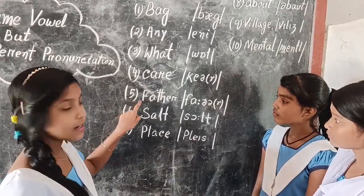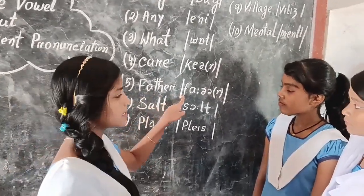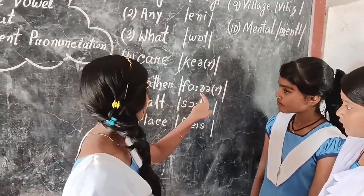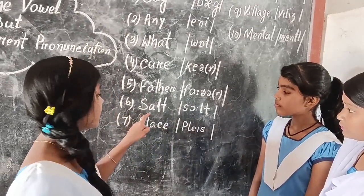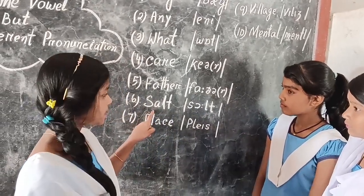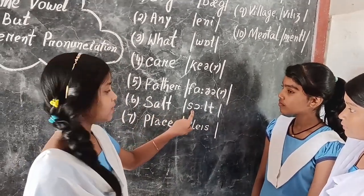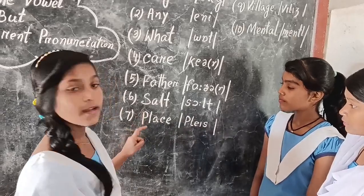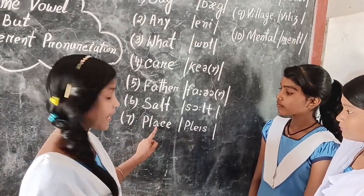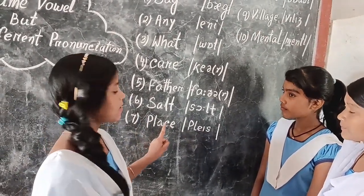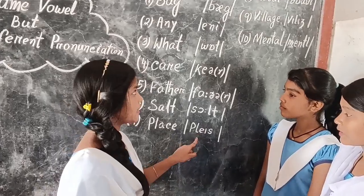'Father' — here 'a' represents 'a', so this is father. 'Salt' — here 'a' represents a long 'o', so this is salt. 'Place' — here 'a' represents the 'ay' sound, so this is place.